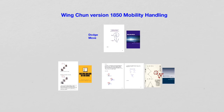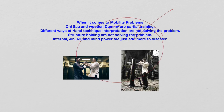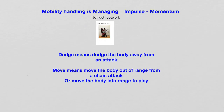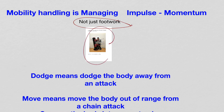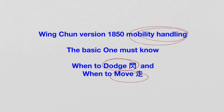Remember, mobility handling is knowing when to dodge and when to move. Chi Sao and wooden dummy are partial training, but if we do not clearly know about dodging and moving, we can't handle it — it doesn't solve the problem. It is not just footwork; it is the entire body: the leg, the body, the arm, the footwork — all together. That is mobility. Wing Chun version 1850 is very different from Wing Chun 1960s, where it is just footwork.